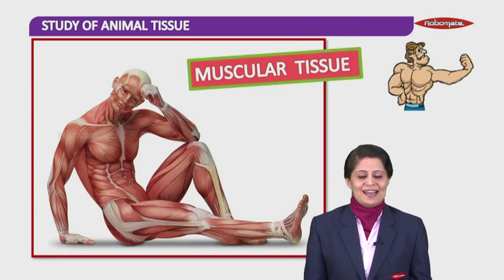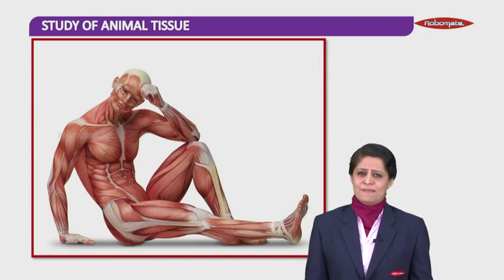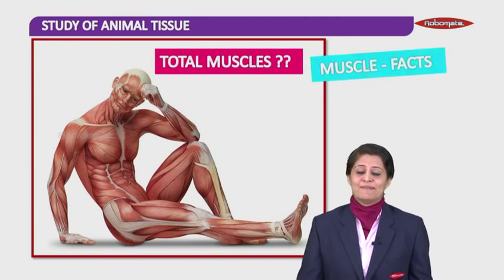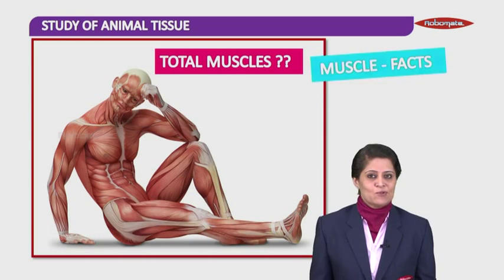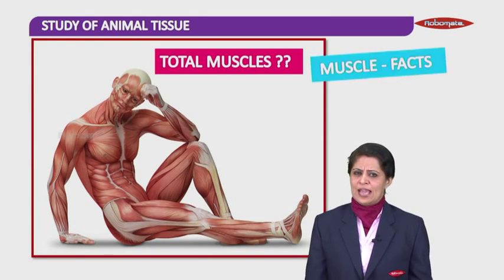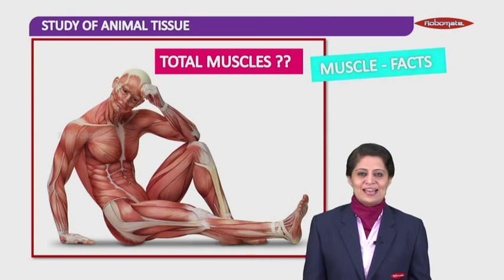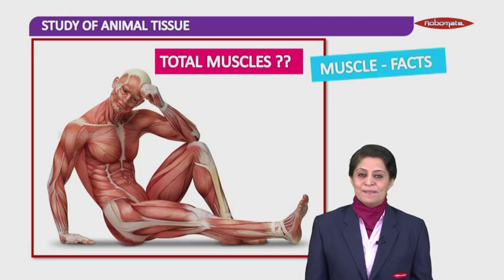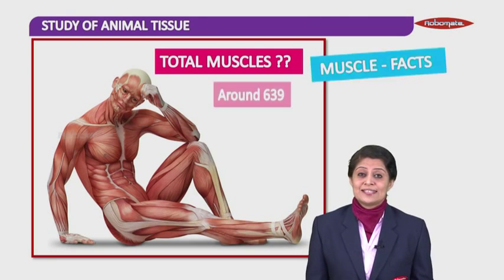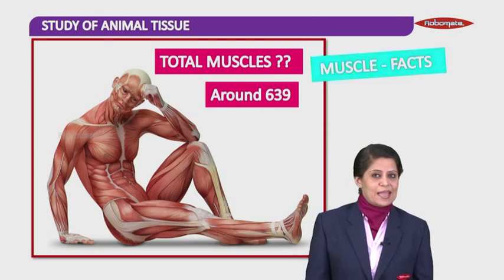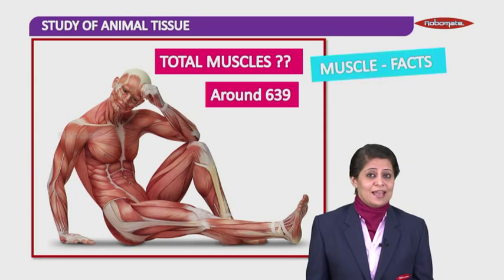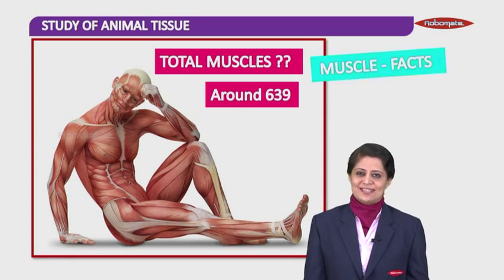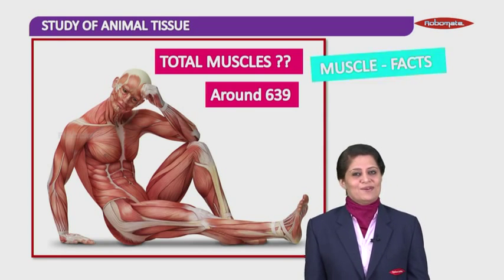Firstly, how many total number of muscles do you have in your body? Are they many times more than your bones? We remember we have 206 bones in our body. So are the muscles more than bones or less than bones? Muscles in your body are around 639 in number — many times more than the number of bones. Although most of them are attached to the bones itself.